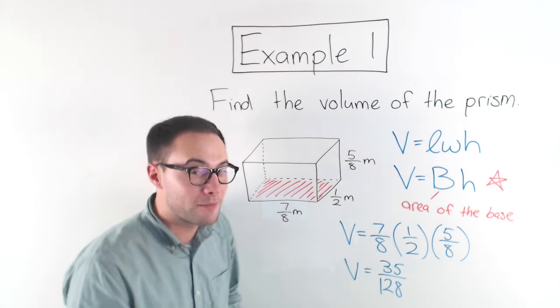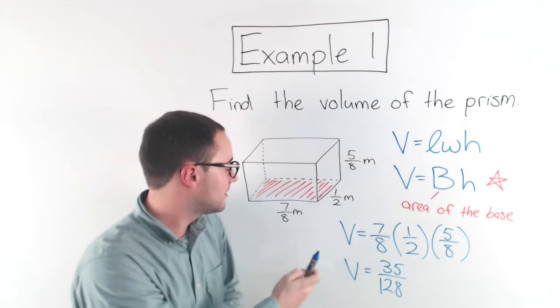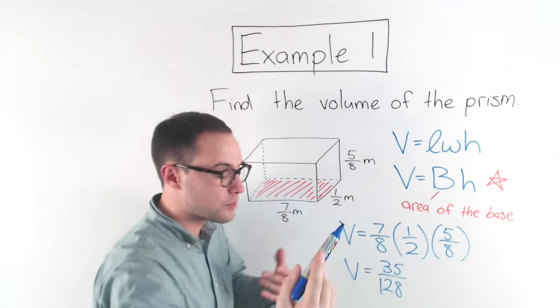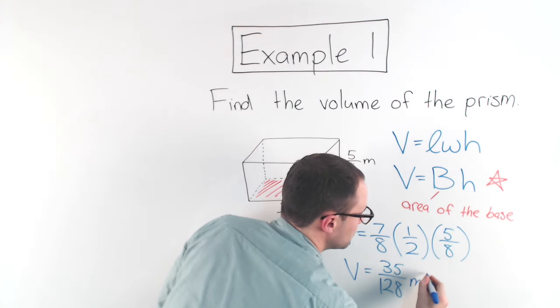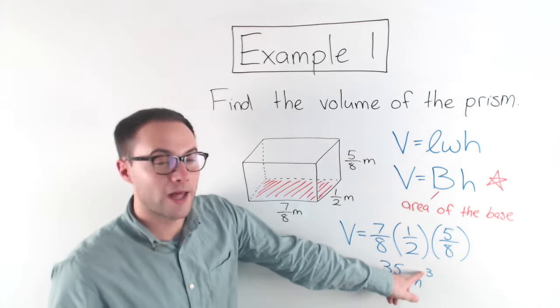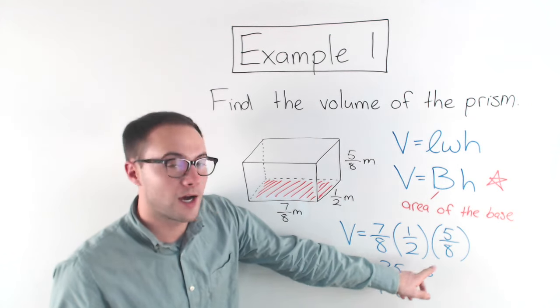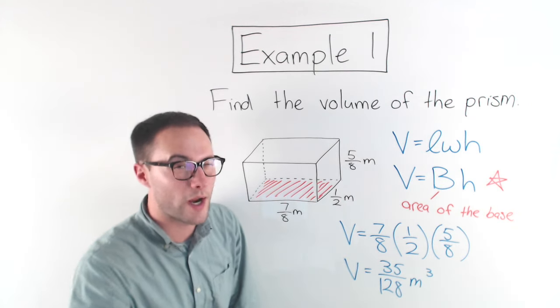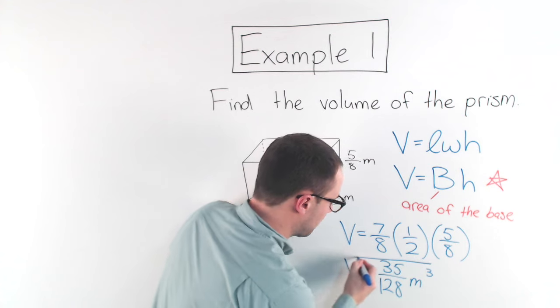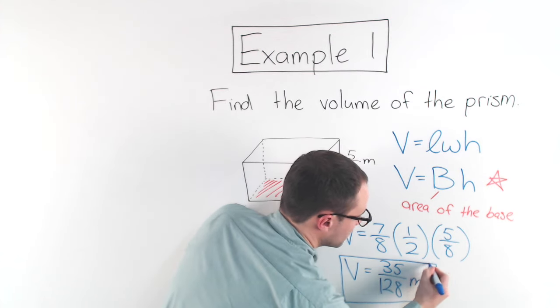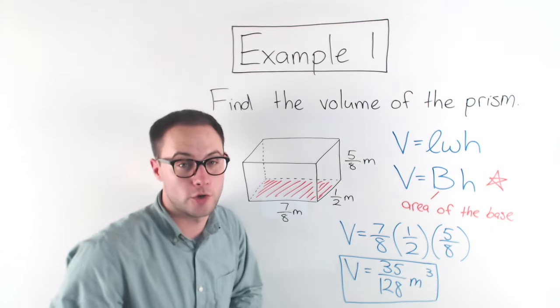And then if you remember, the thing you've got to remember, units at the very end. Meters times meters times meters will give me meters cubed. And you show that with a little 3 up there, instead of squared. Right? So final answer, 35 over 128 meters cubed.